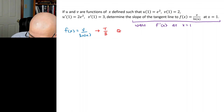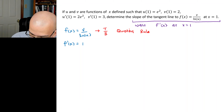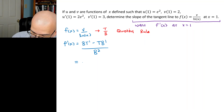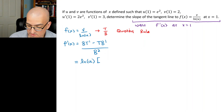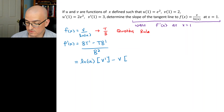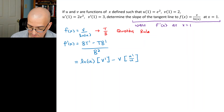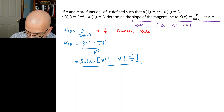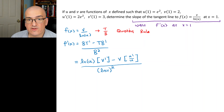According to the quotient rule, we'll have the bottom function times the derivative of the top, minus the top function times the derivative of the bottom, divided by the bottom squared. Our bottom function is ln(u), multiplied by the derivative of the top v, which is v'. Minus the top function v multiplied by the derivative of ln(u). The derivative of ln(u) is u'/u, all divided by the bottom squared.